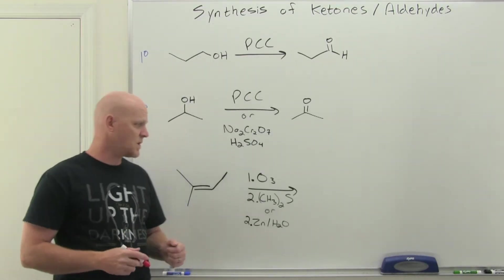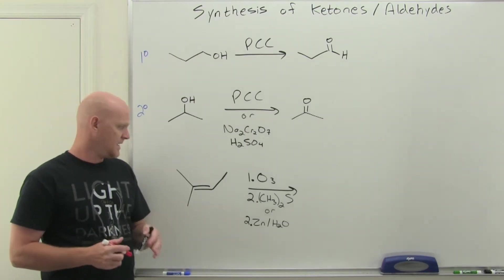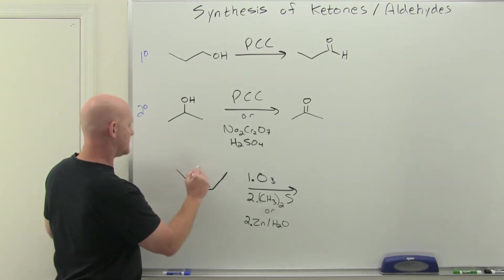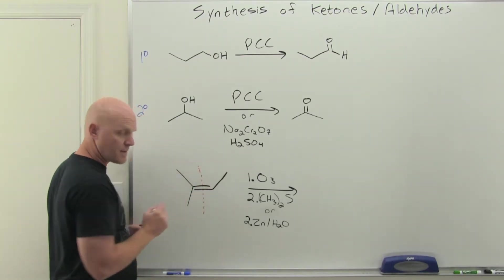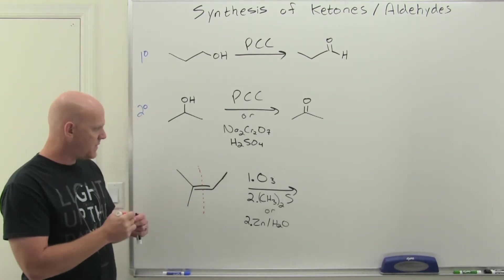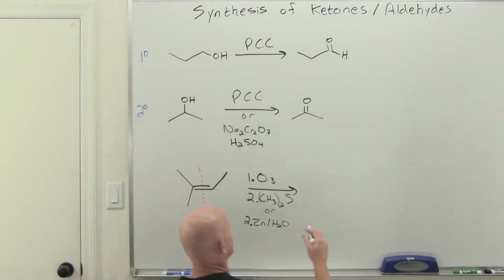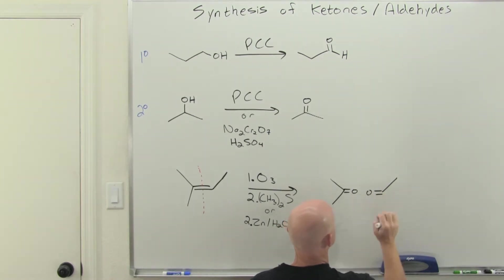So the next reaction we'll look at was ozonolysis of alkenes. You might recall that ozonolysis is an example of what we call oxidative cleavage, and it will cleave either a carbon-carbon double or triple bond. We're going to look at the carbon-carbon double bonds in this example. On both sides, this is going to get replaced with a carbon-oxygen double bond instead.